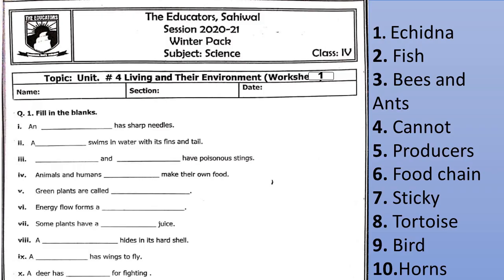Dear students, please open your winter pack and come to page number nine. Here is a worksheet for you. Topic: unit number four, living things and their environment. Write down your name, section, and date. After the completion of this worksheet, paste it on your science notebook.